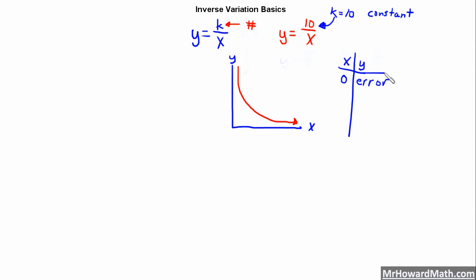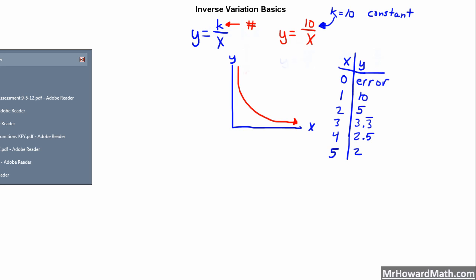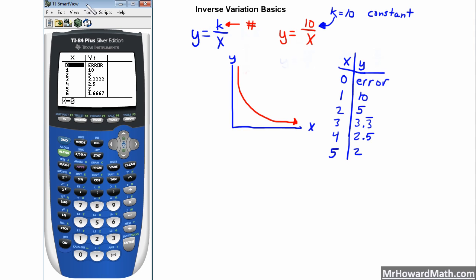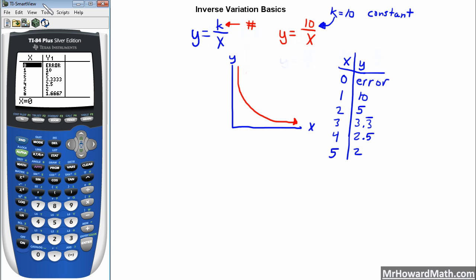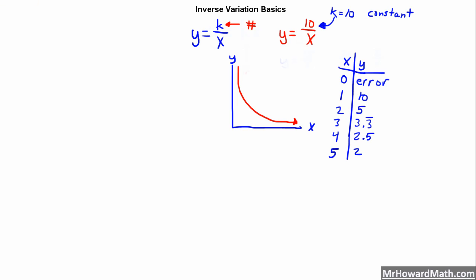We've already got the error part in there. When, on our calculator, when x was 1, we had a y value of 10. When x was 2, we had a y value of 5. When x was 3, we had a value of 3 and 1 third or 3.3 repeating. When x was 4, we had a y value of 2 and 1 half. And when x was 5, we had a y value of 2. That should be good enough. Bring the calculator back in quickly. And you will see that we have the same setup here. We have x of 0 gives us an error, x of 1 gives us 10, x of 2 gives us y of 5, 3 gives us 3.3 repeating, 4 gives us 2 and 1 half, 5 gives us 2.